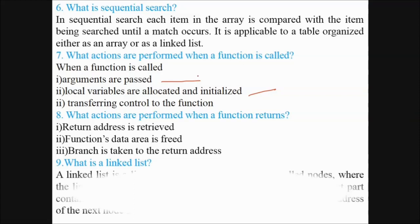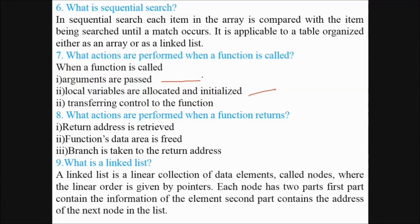What is a linked list? A linked list is a linear collection of data elements called nodes, where the linear order is given by pointers. Each node has two parts. First part contains the information of the element. Second part contains the address of the next node in the list. That is why we call it as a linked list. It is a linear connection of data.